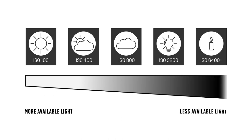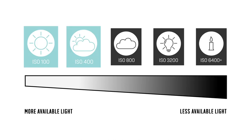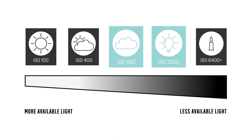So let's take a look at the ISO sensitivity scale to understand what level we might need. A low ISO between 100 and 400 is best used when the surrounding light is bright. A mid ISO between 800 and 3200 comes into play for indoors or when the weather is overcast and the light is poor.